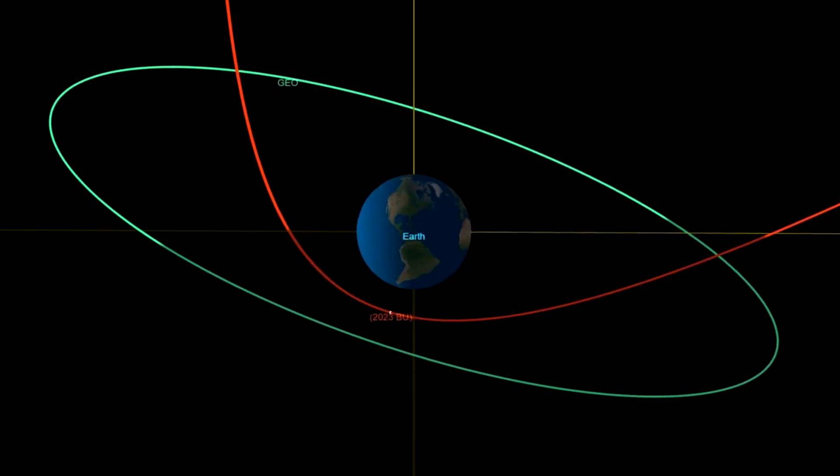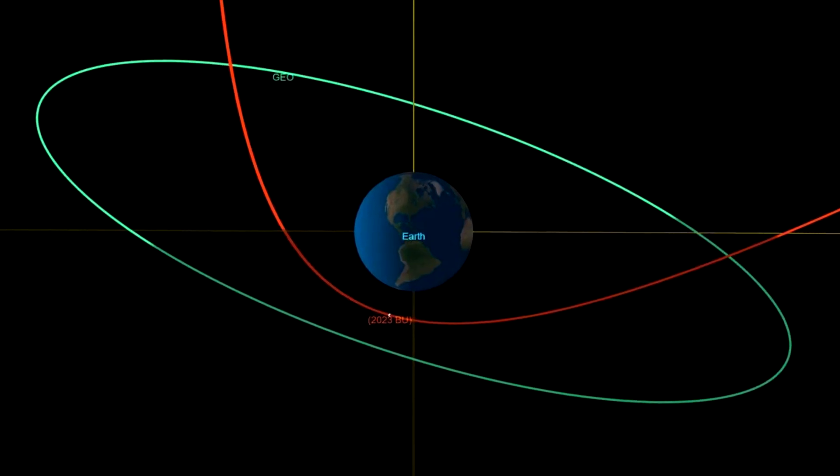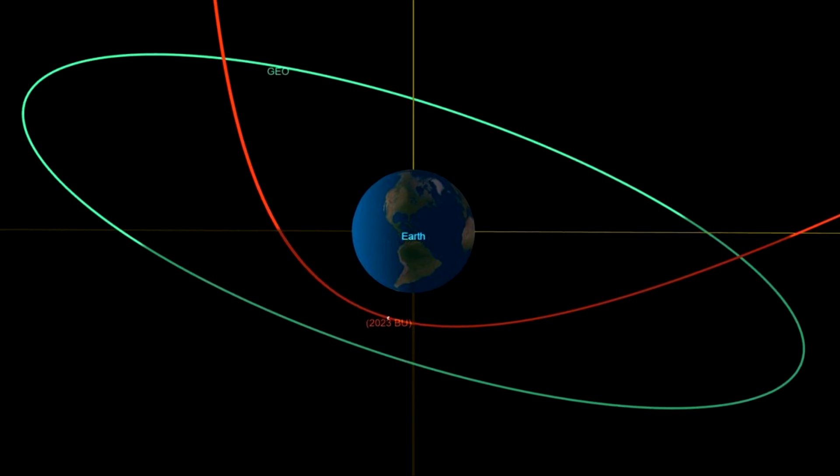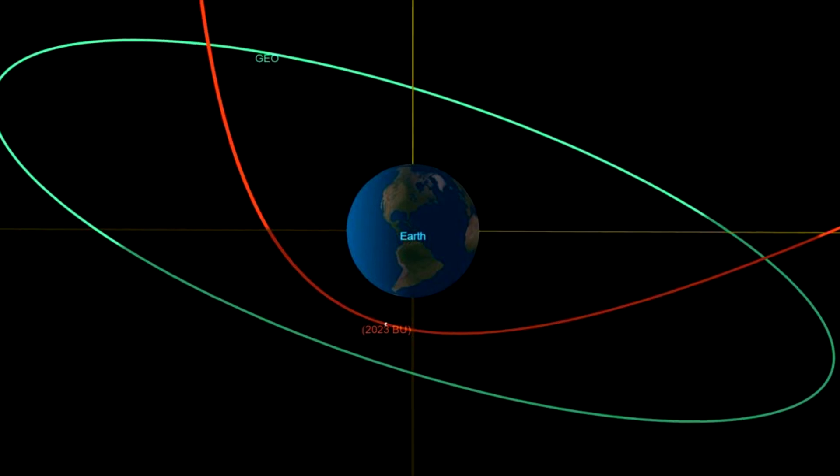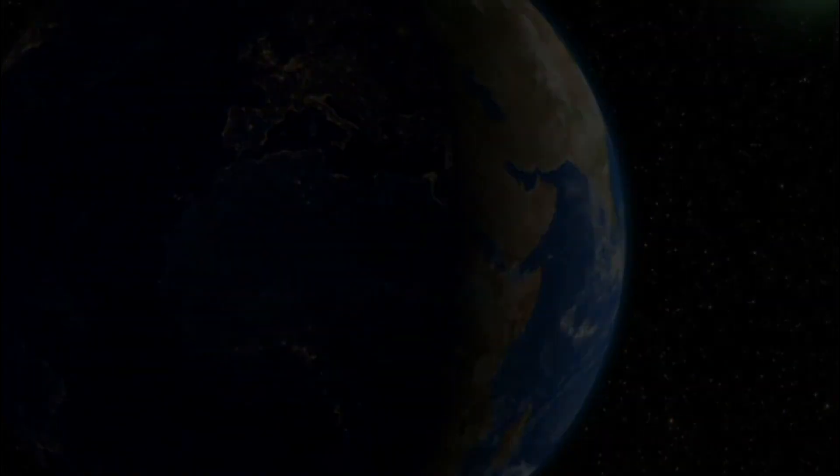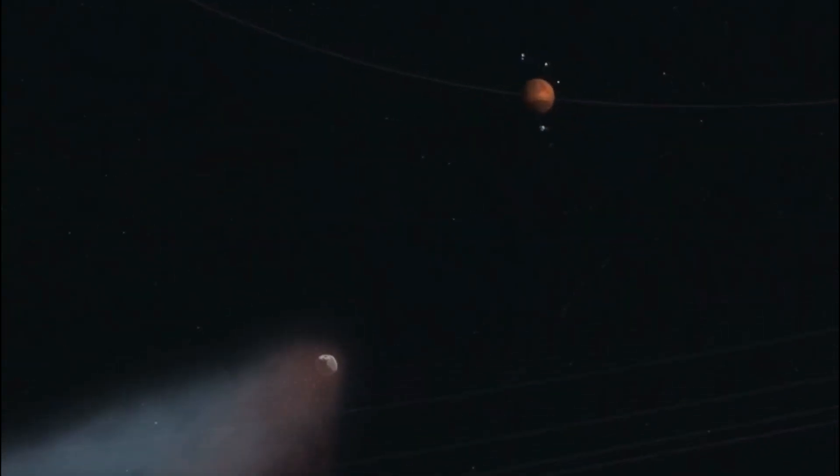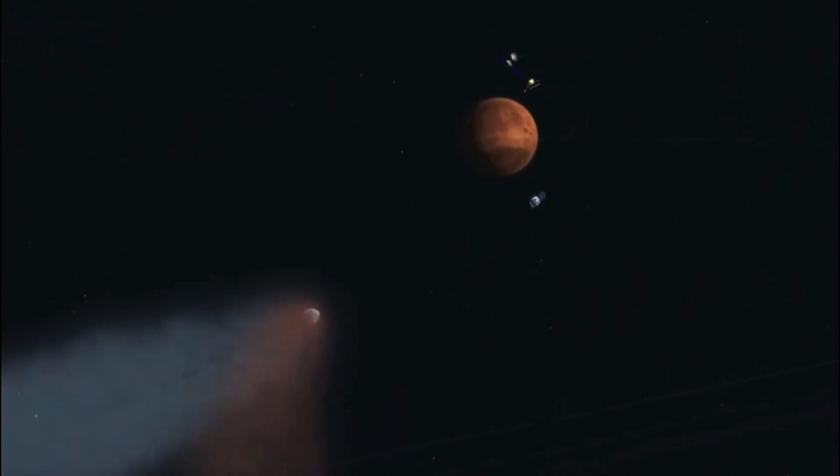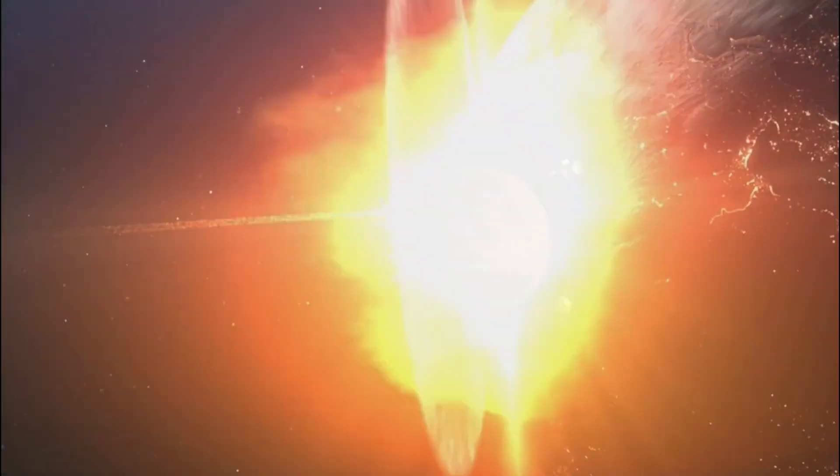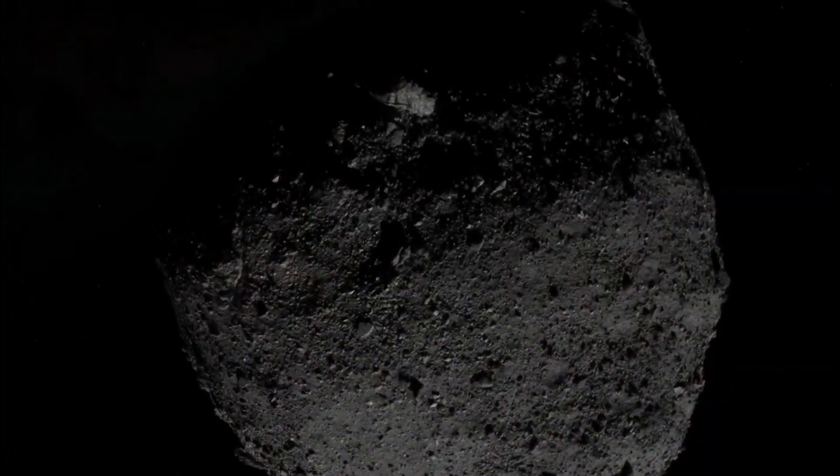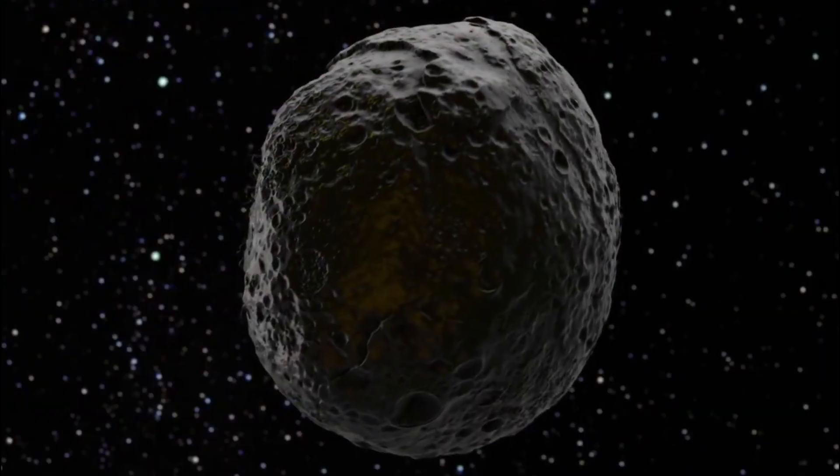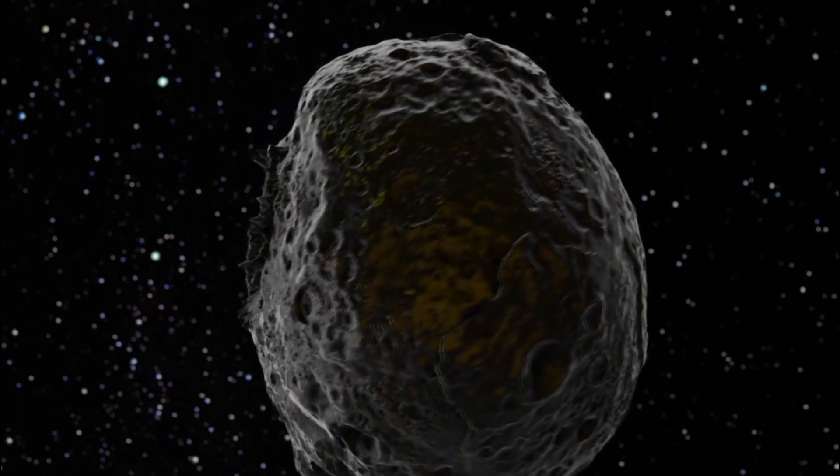Earth's gravity changes the trajectory of asteroids, but 2023BU came so close to our planet that its orbit around the sun changed after the encounter. Before Thursday's close pass, the asteroid had a circular orbit that took about 359 days to complete around the sun. Now scientists estimate that the asteroid's orbit is elongated, extending that single orbit of the sun to 425 days.